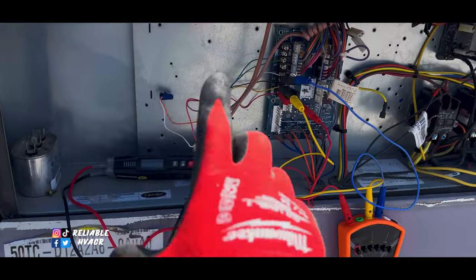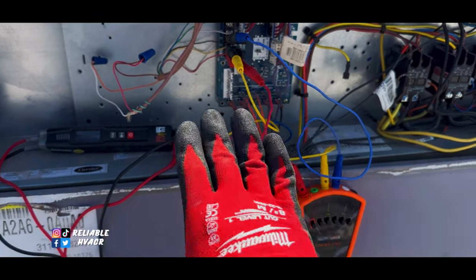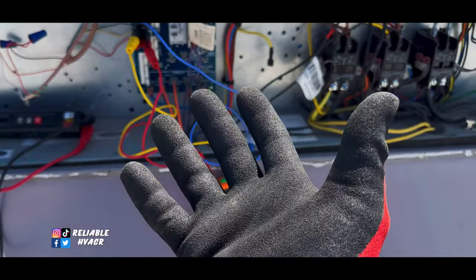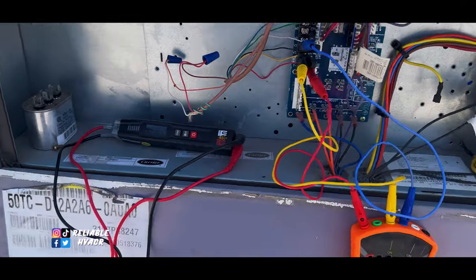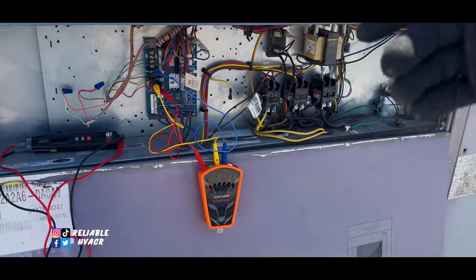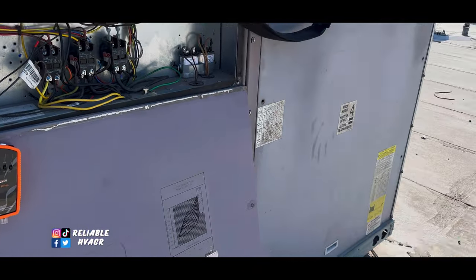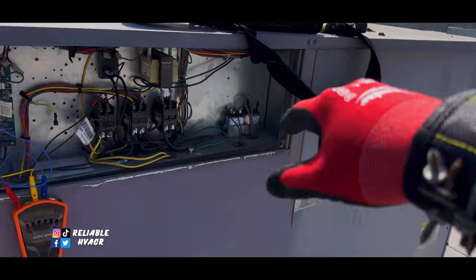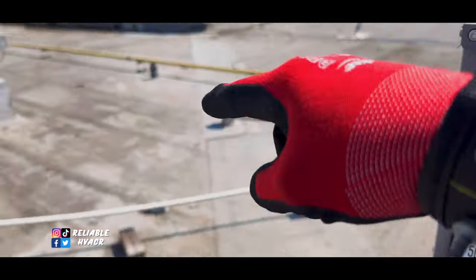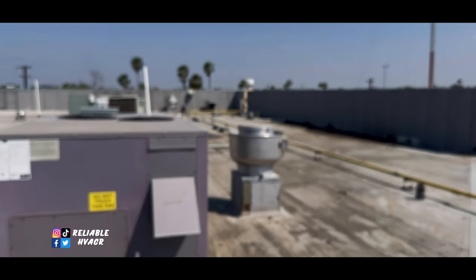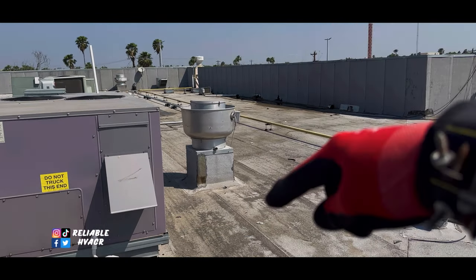Alright. So, our thermostat is blank. Our pressure switches are closed. We don't have any issue with loss of charge that I can see. Now, I'm a long ways from the building inside. I'm at the end over here. This is where the AC unit is. I have to go all the way to the end over there.